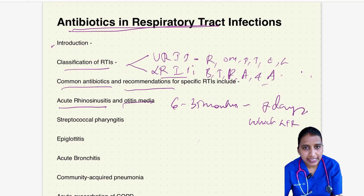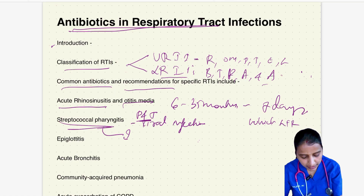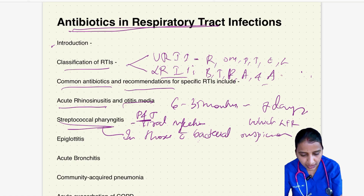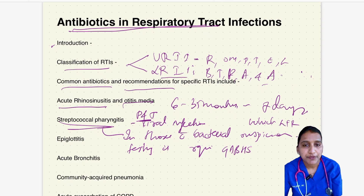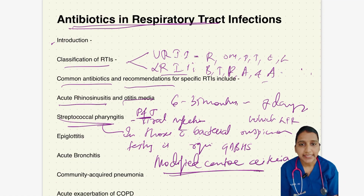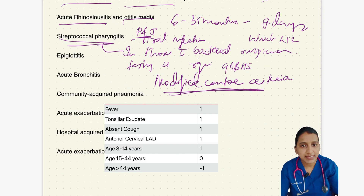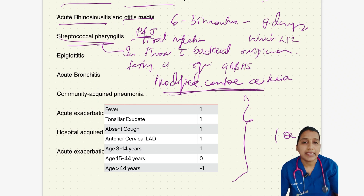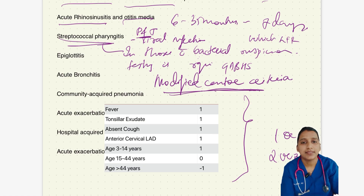Next, coming to pharyngitis and tonsillitis: most cases have viral infection. In those with bacterial suspicion, according to the Infectious Disease Society of America, testing is required to confirm group A beta-hemolytic streptococcus before initiating antibiotic, to reduce overuse. If testing can't be performed, modified Centor criteria can be used, which contains specific parameters. If the score is one or less, no further testing or treatment is required. If the score is two or more, streptococcal rapid antigen detection testing is required and further treatment based on this detection can be done.